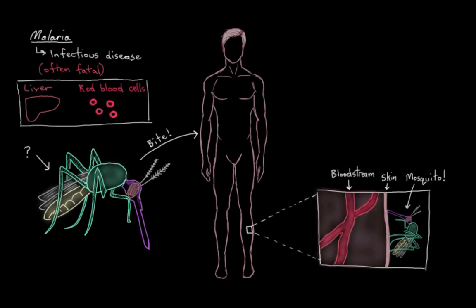Why are mosquitoes always biting us? Well, it's because they need to feed on blood in order to survive. They're like little flying vampires, which incidentally is my personal worst nightmare. So she's trying to get at our blood by biting us.